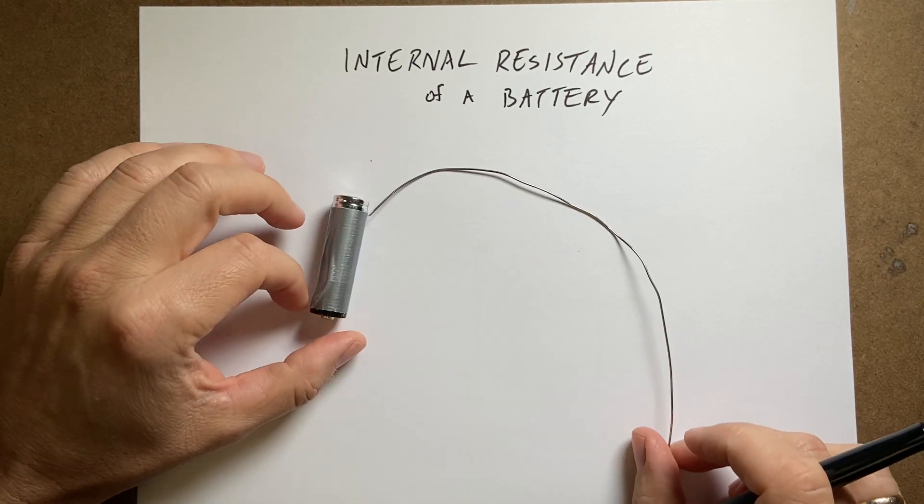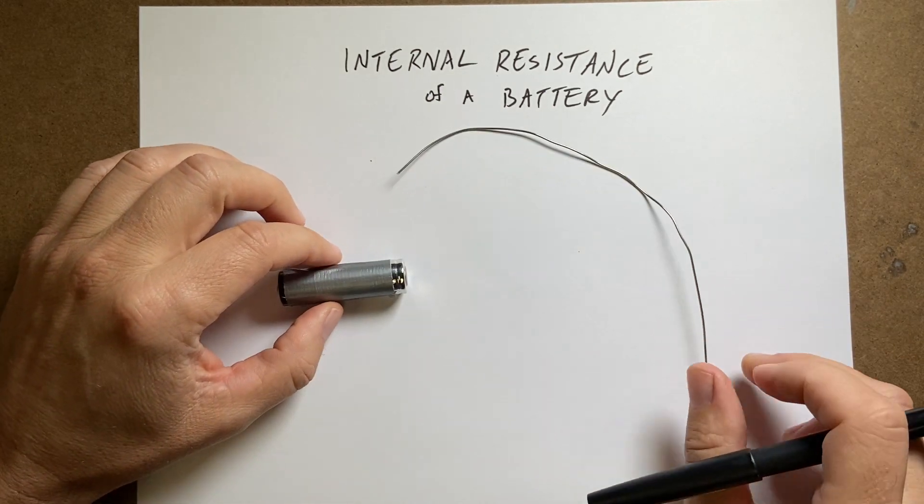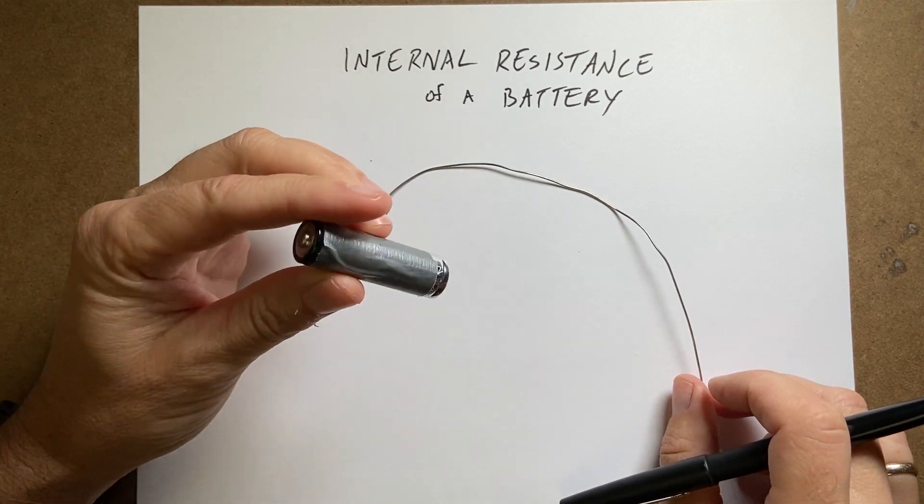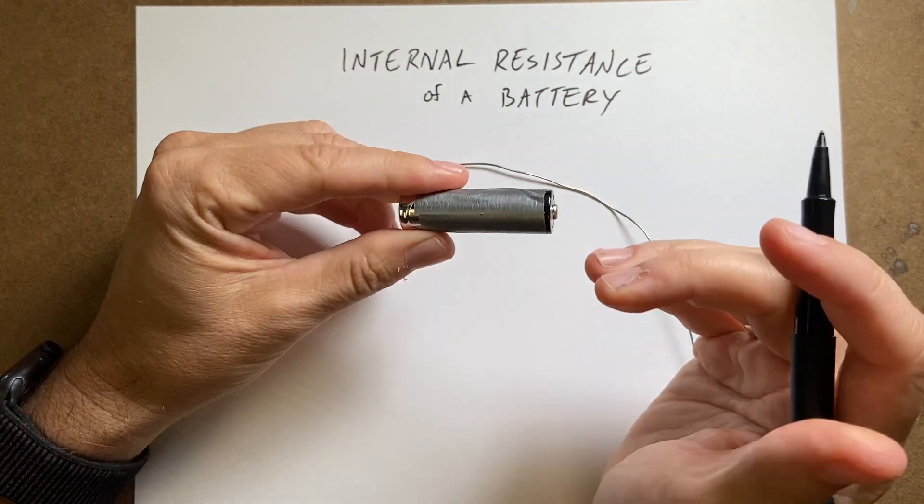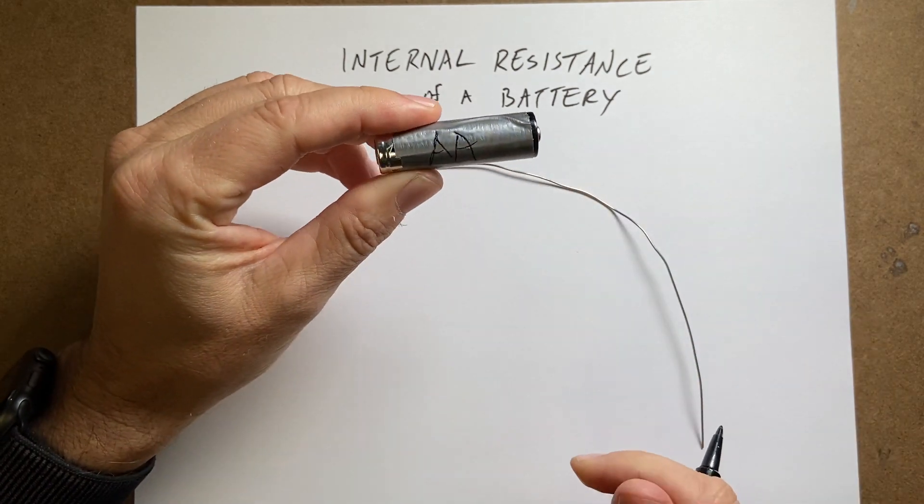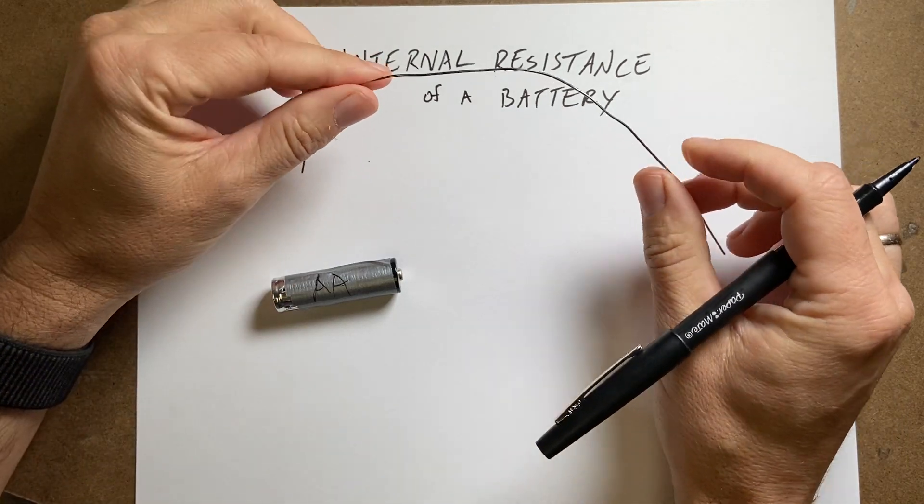Okay, so we talk about batteries and wires all the time. Let's just think about a simple example. This is a AA battery. Look, I'll even write it on here. AA. See, it even says AA right on there. AA battery. And this is a wire.